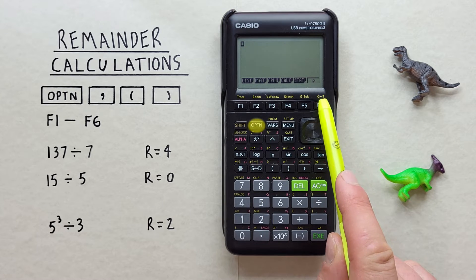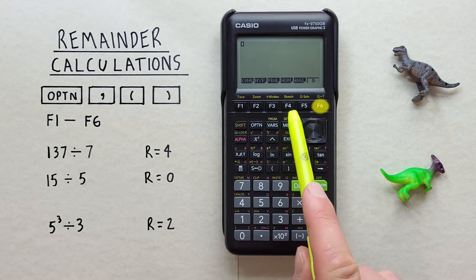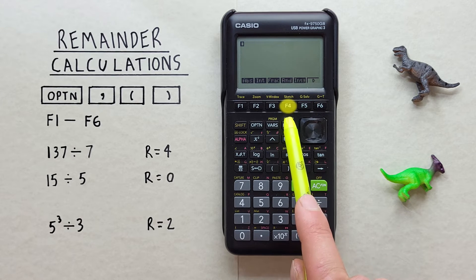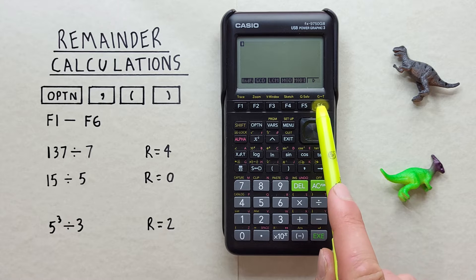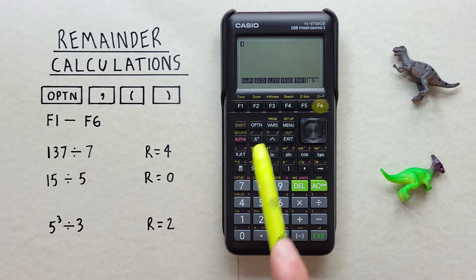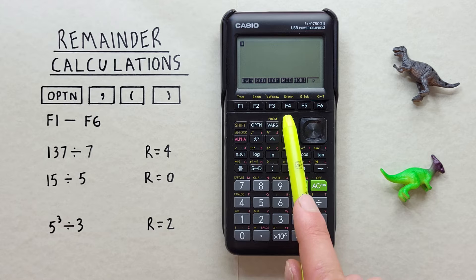We do this by hitting the Option key, then the F6, and then the F4 for num, and then the F6 again. And now under F4 we see mod for modulus or remainder.